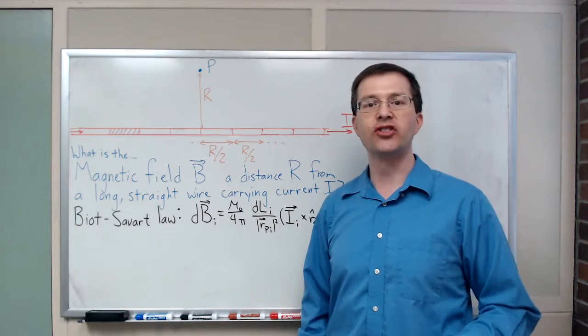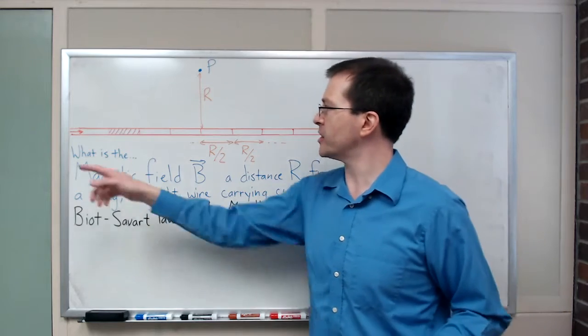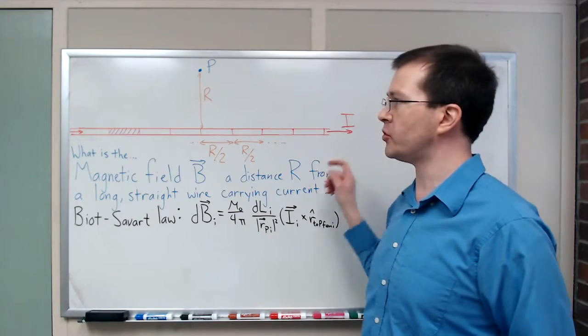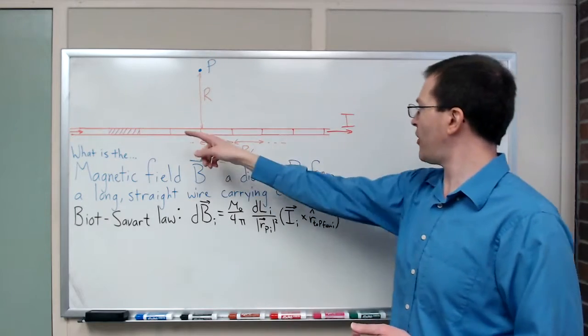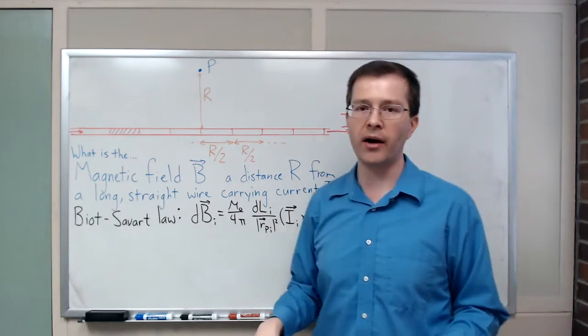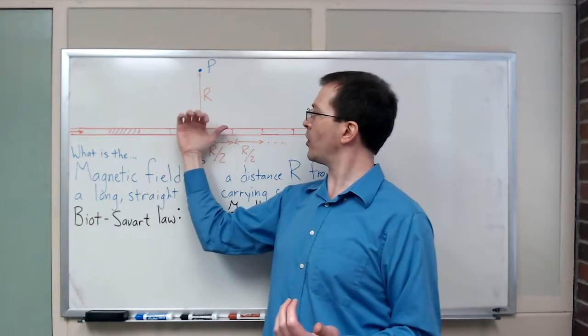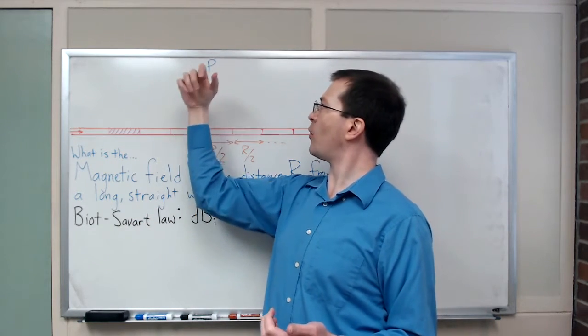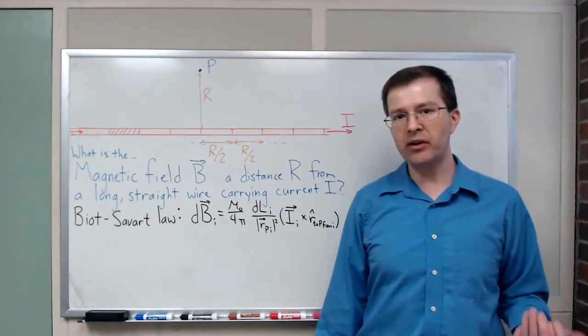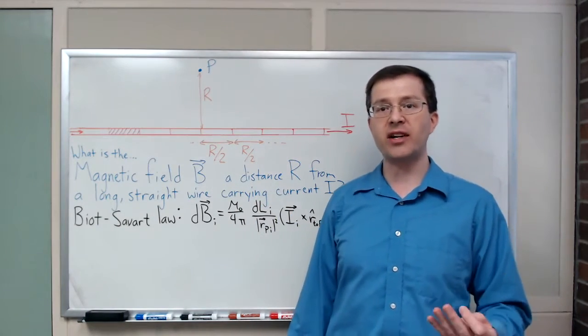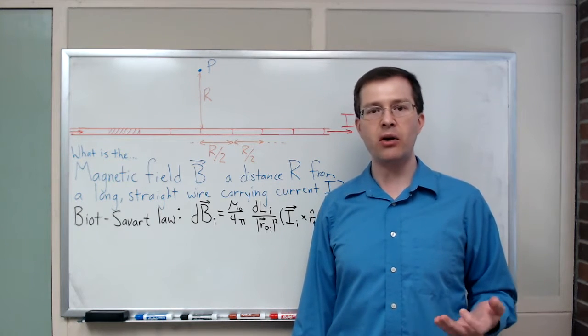So if I were to ask you what magnetic field does a long, straight wire produce at a point P above the wire, if I've got a current I flowing through the wire, current is taken to be positive. Then you could use the right-hand wire rule and say thumb along the wire, my fingers are outward, I expect a magnetic field out of the board at that point. To do better than that, to be able to verify that direction and calculate the strength of that field, we need to use the Biot-Savart law.